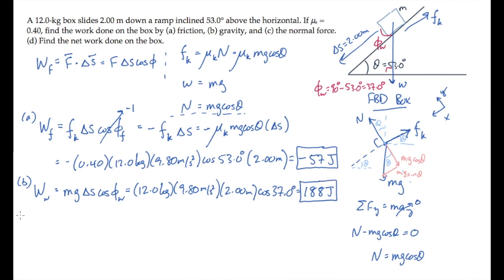Part C asks us for the work done by the normal force. I'll draw that here in green. Notice that it is perpendicular to the displacement. So when we write the work, it's the magnitude of the normal force times the magnitude of the displacement times cosine of that angle, which is 90 degrees, and cosine of 90 is zero. So there's no work done by the normal force.